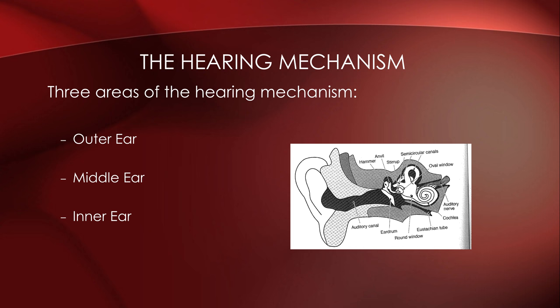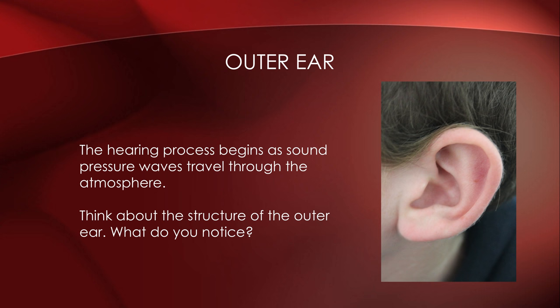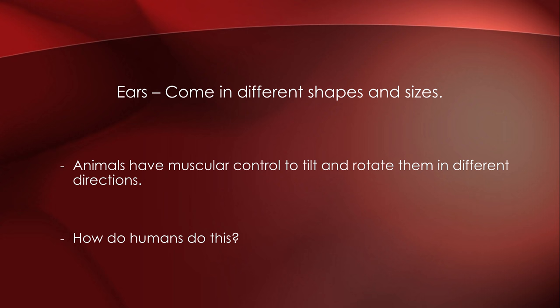The outer ear is the part of the hearing process where sound pressure waves begin traveling through the atmosphere. Think about the structure of the outer ear — it's kind of like a funnel. There are crevices, and it's used for protection. It's important that humans protect their ears, and over hundreds of thousands of years our ears have changed to better suit us.